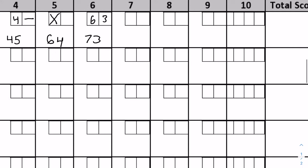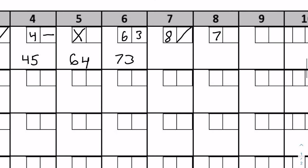They bowl again, getting an eight and then a spare. You leave that box blank until the next throw. They get a seven, so you can now add the spare frame: 10 plus 7 equals 17 points, bringing the total to an even 90. They then get a two to add another nine points, putting them at 99.